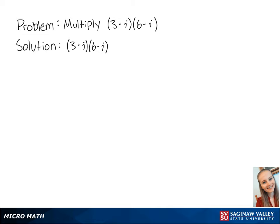For this problem, we want to multiply the complex numbers 3 plus i and 6 minus i. We multiply complex numbers just like we multiply binomials.